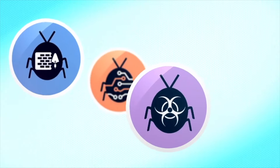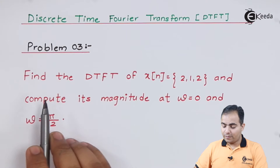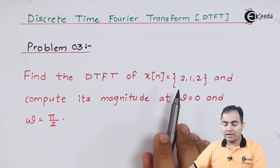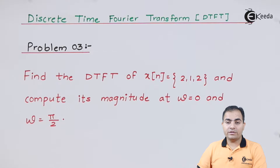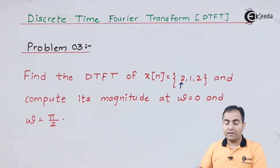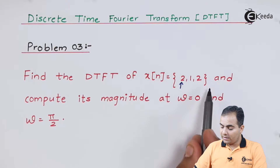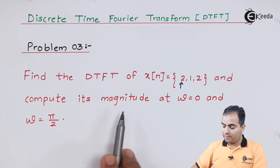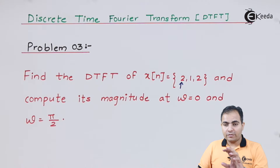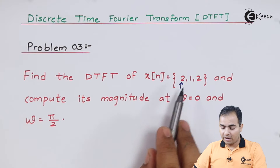Problem number three: find the DTFT of x[n] where the samples are 2, 1, 2. Here also the origin value is not marked, so we'll assume the leftmost value is the origin value. Compute the magnitude response but only for omega equals 0 and omega equals pi by 2.